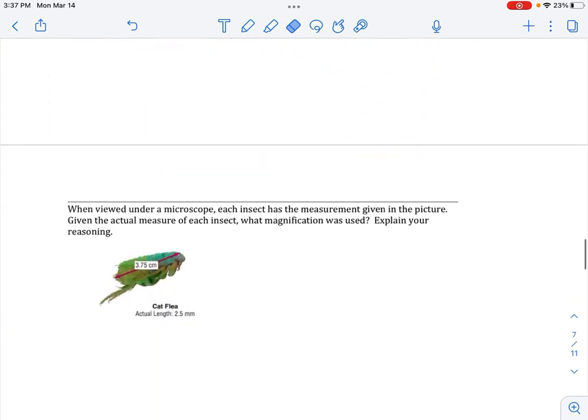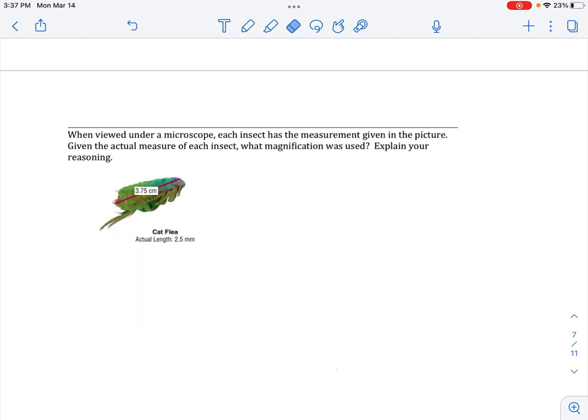And then our next example, these aren't too bad questions like this. You just end up dividing, but you do need to get common units. So our microscope-viewed version is in centimeters, while the actual is measured in millimeters. So it says, when viewed under a microscope, each insect has the measurement given in the picture. Given the actual measure of each insect, what magnification was used? Explain your reasoning.